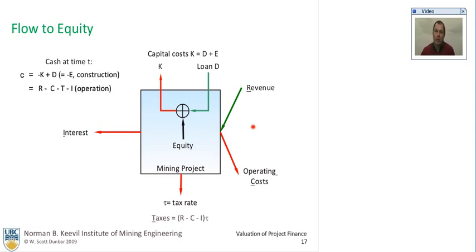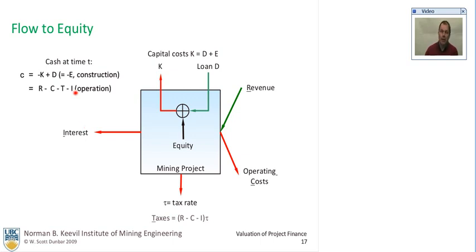Usually we deal with a flow to equity — that is, the cash flow to equity — and this leads to valuation techniques. We're not dealing with the cash flow to lenders. There is an interest payment. This is actually for a perpetual project; we're not doing any principal payments because it's a perpetual company or project. This is just the same as the slide that was shown yesterday.